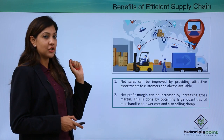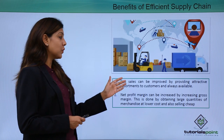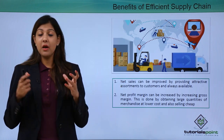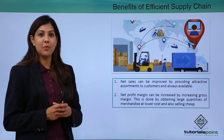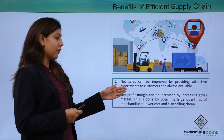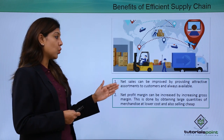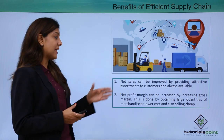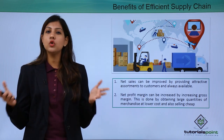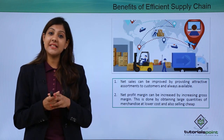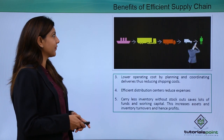Regarding the benefits of an efficient supply chain: net sales can be improved by providing attractive assortments to customers and ensuring products are always available — business and sales are closely linked. The more sales you make, the more profit comes your way. Net profit margin can be increased by obtaining large quantities of merchandise at a lower price and selling them affordably — distributors benefit greatly by buying in bulk and selling cheaply, gaining significant profit.